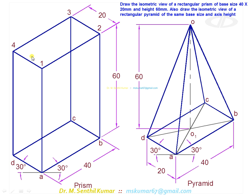If you see the prism, the 1-2-3-4 plane is visible, so darken these four edges. Then 4D is visible, 1A is visible, 2B is visible. Darken only these three.